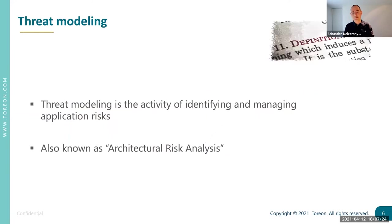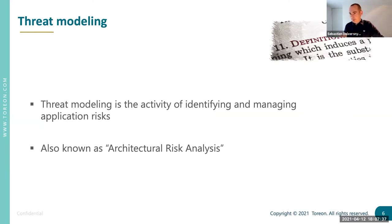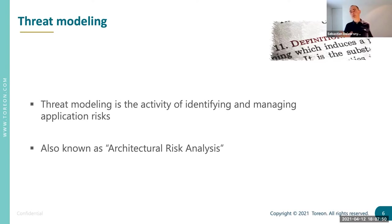Threat modeling, in essence, is the activity of identifying aspects that can go wrong in your system — but also asking how you deal with that, how you manage it. There will always be flaws in your system, but some flaws are much worse than others. You need some way to weigh them and select what you're going to do to fix them in upcoming iterations. It's sometimes also called architectural risk analysis.